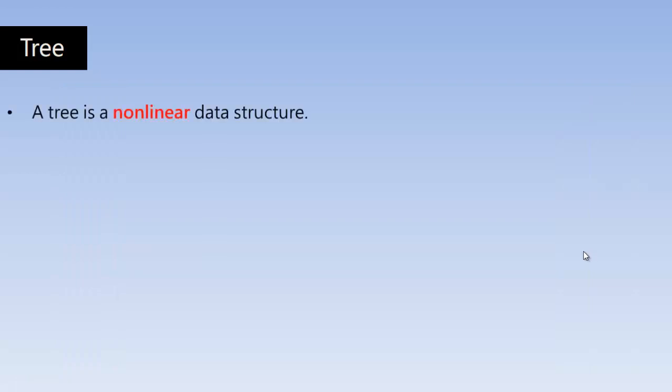A tree is a nonlinear data structure. That means here the arrangement of elements are not in the sequence. They are kept in nonlinear manner. That means you cannot assume the elements stored in the tree in a straight line manner or in a single sequence.